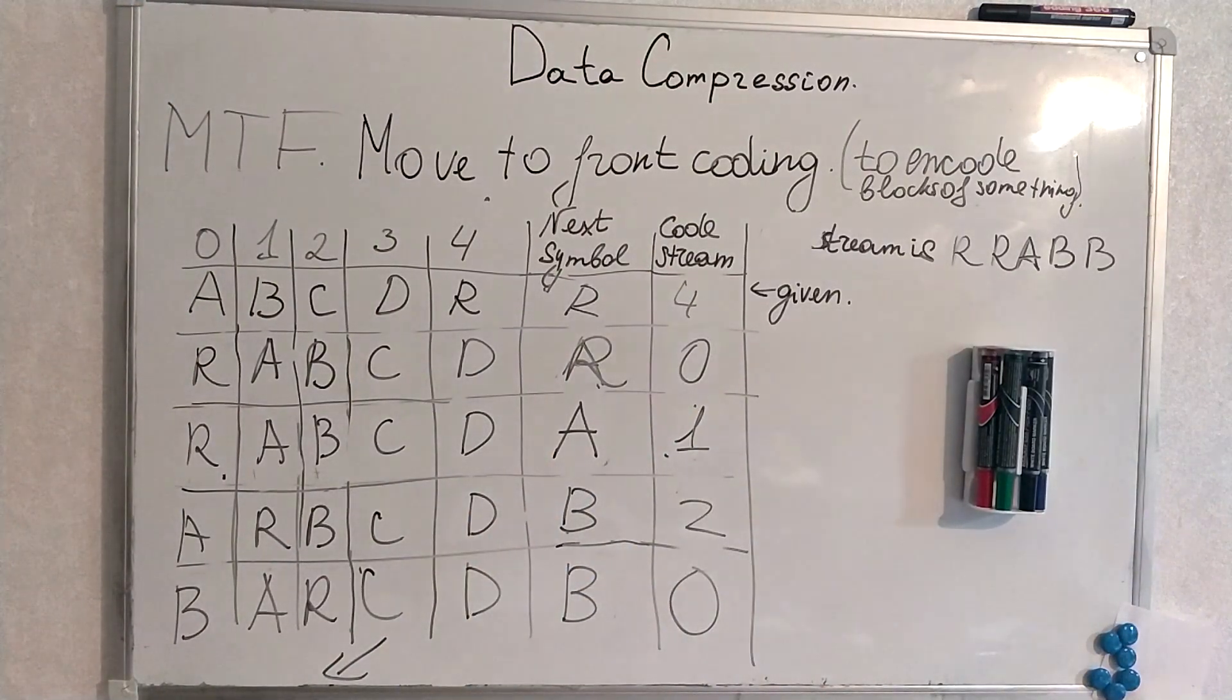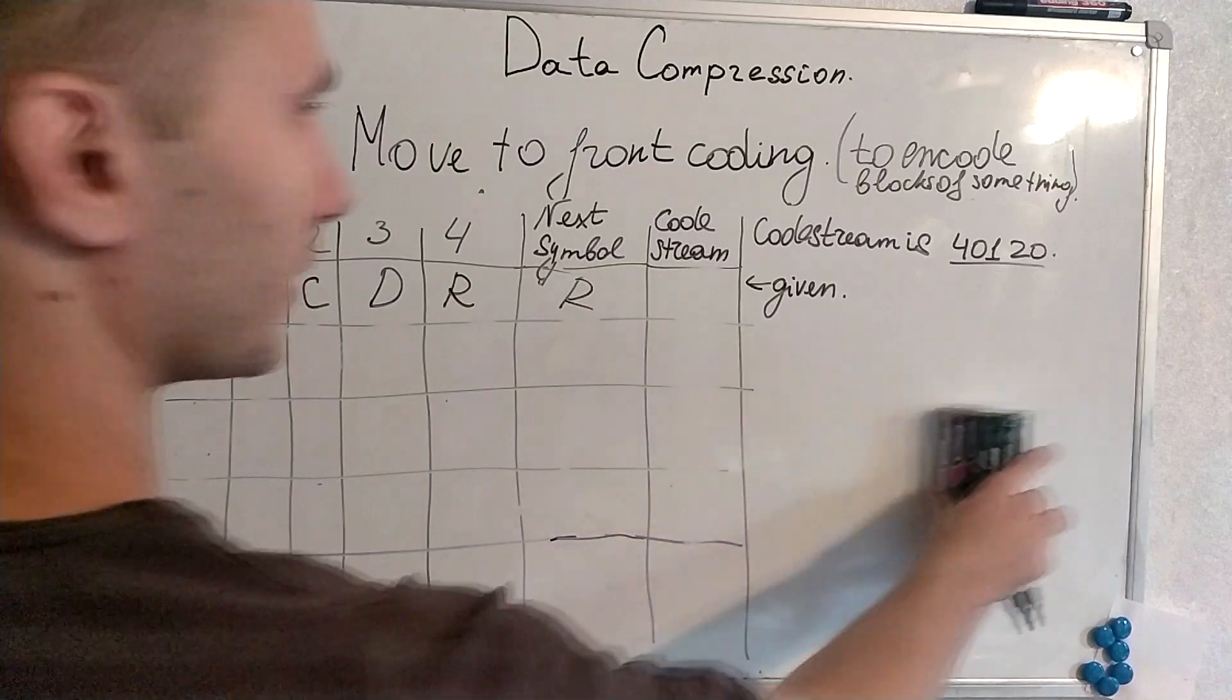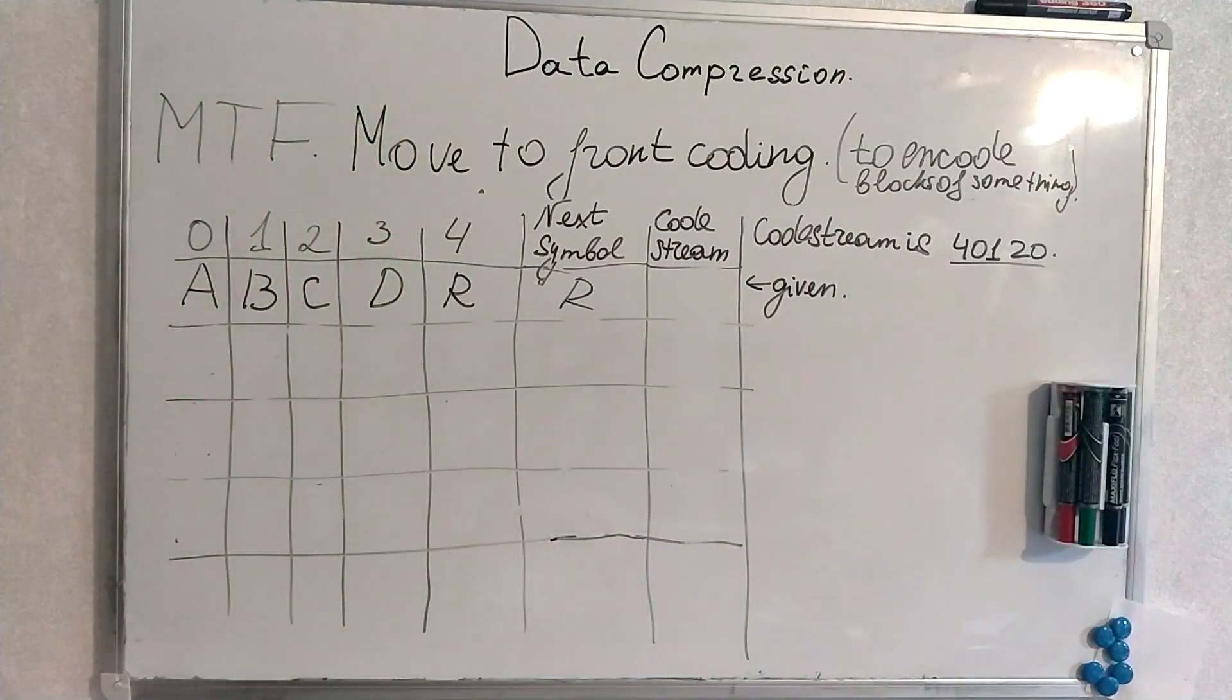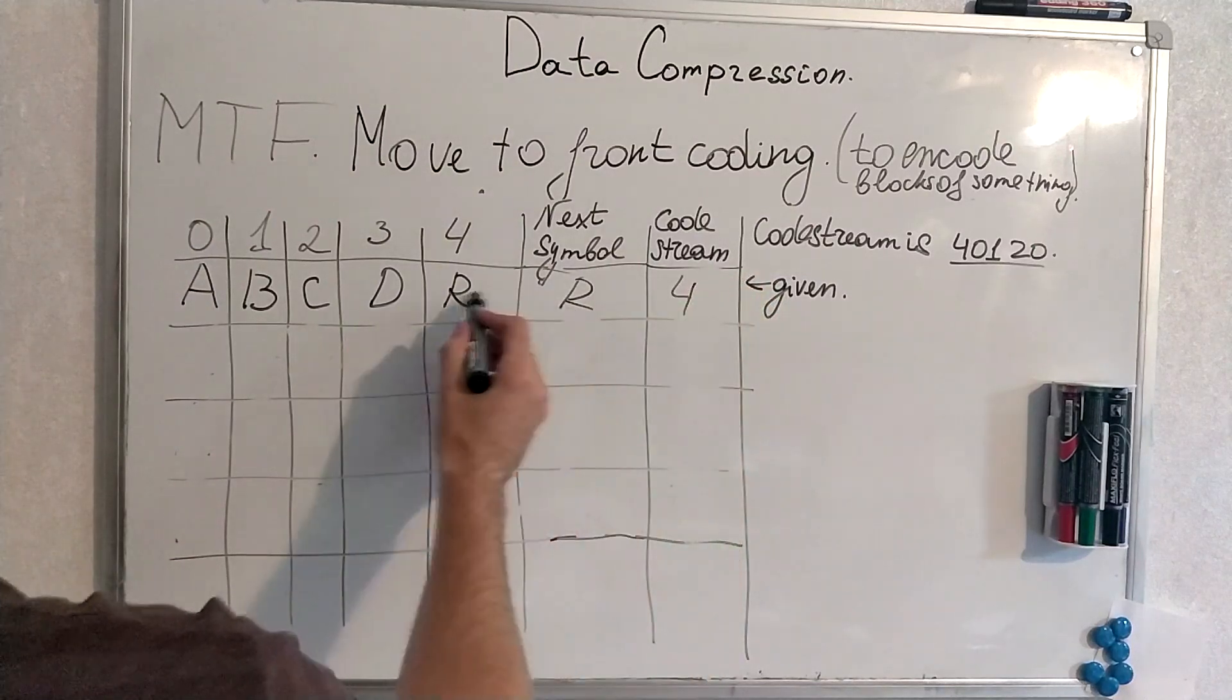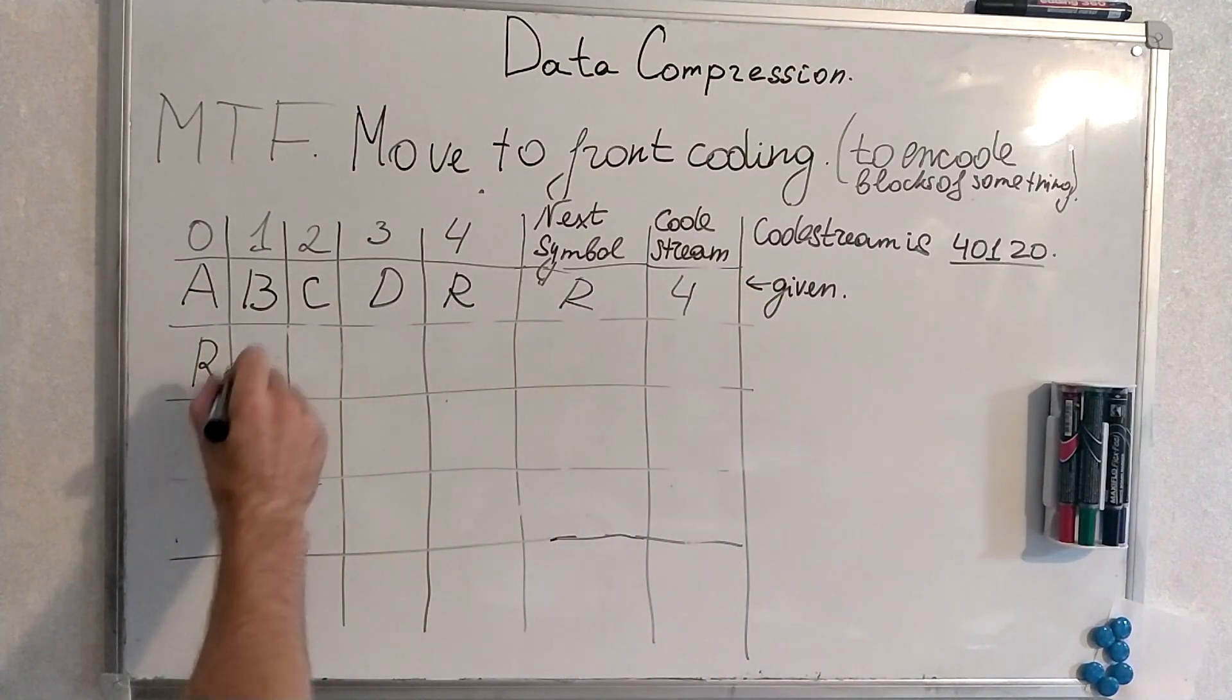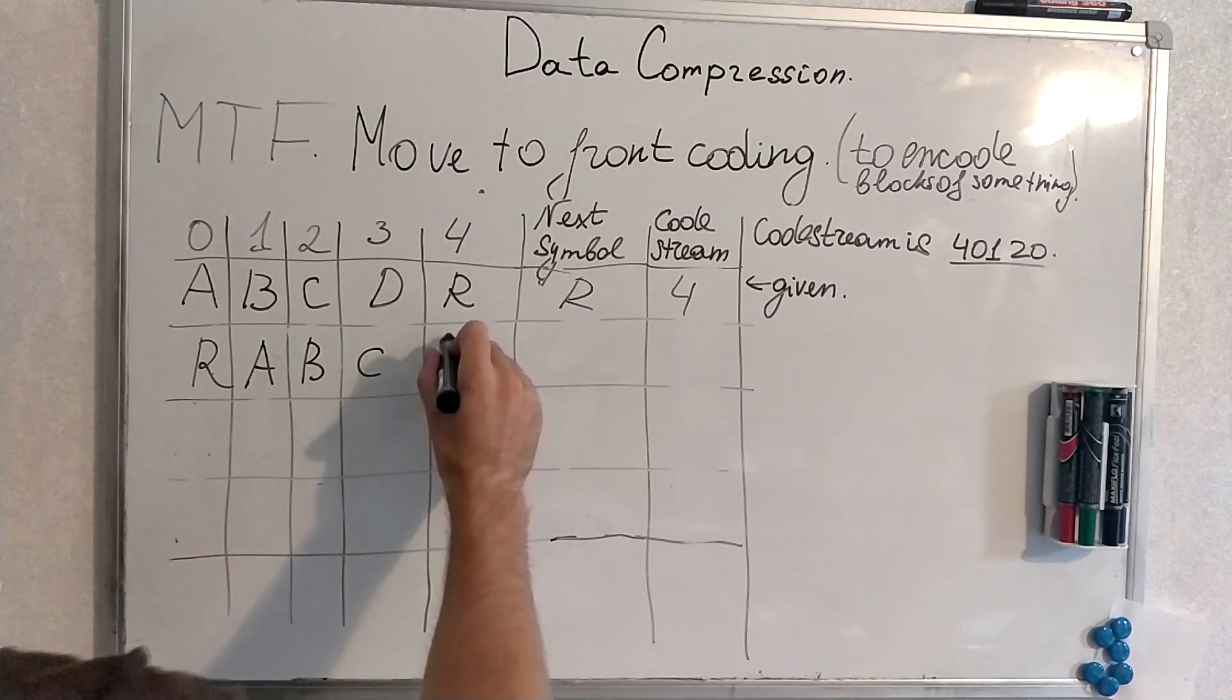And decoding in similar fashion. Code is given and the code stream is this one, code stream 4. Move R to the front. Other symbols are shifted to the right.